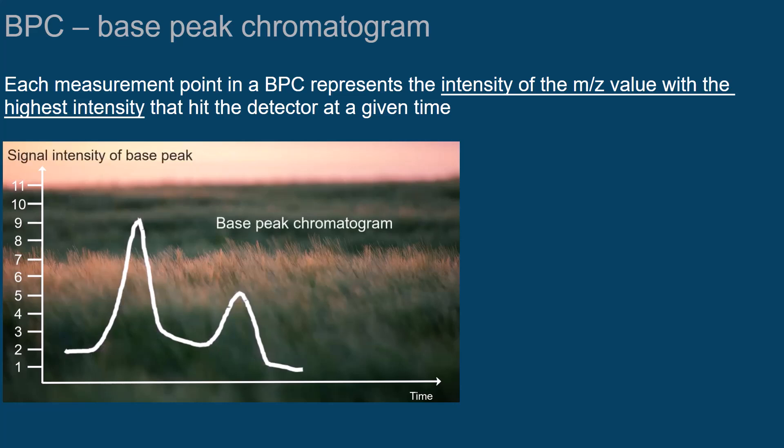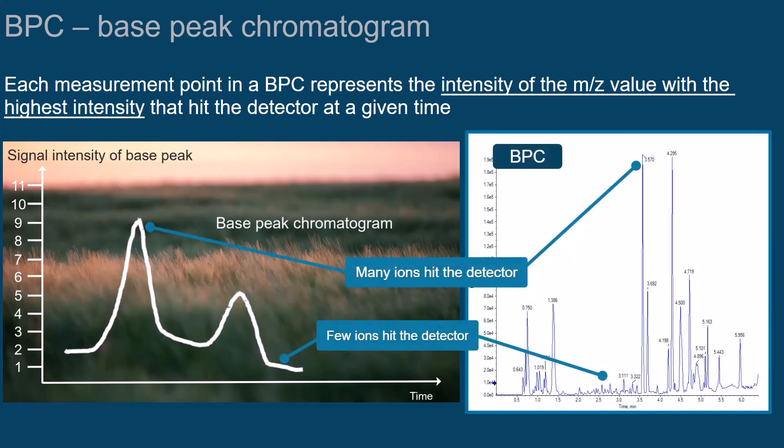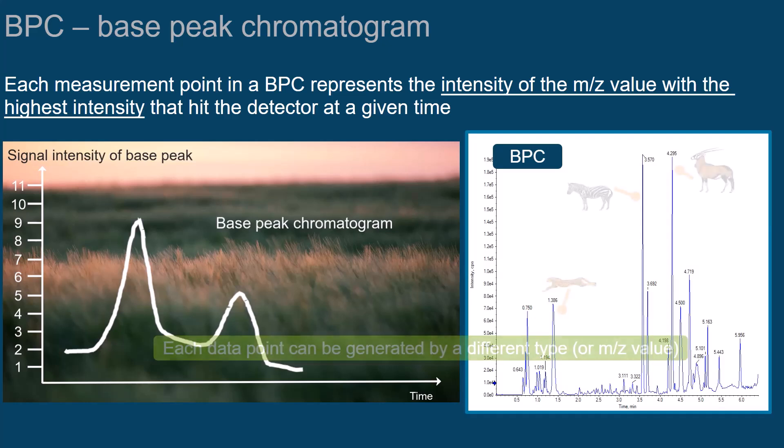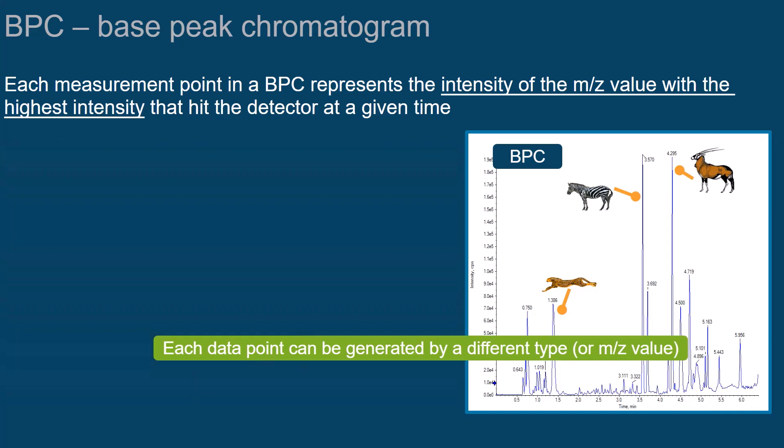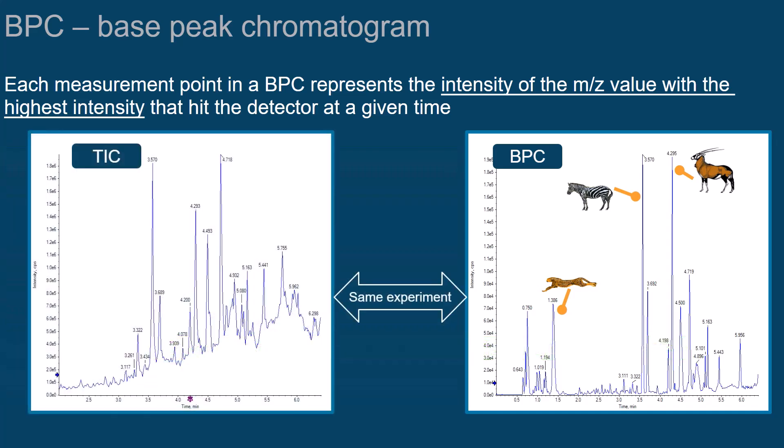Like the total ion chromatogram, the BPC also gives you an impression at what time point the detector recorded how many ions. However, you must keep in mind that each data point can be generated by a different animal type, or M over Z value. It mostly gives a cleaner look because you focus on only one species per scan.